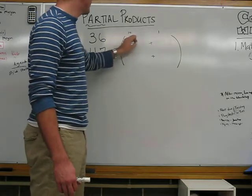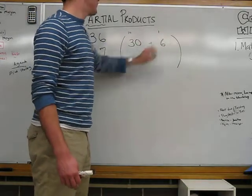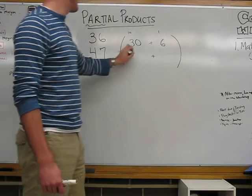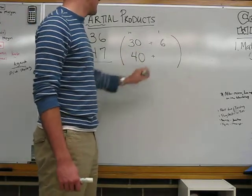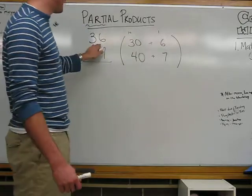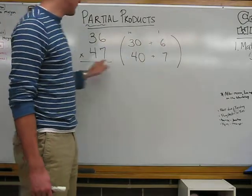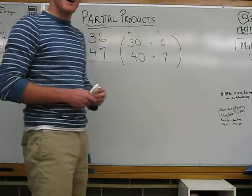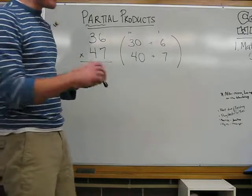36, well, in our tens place, we have 30. In our ones place, we have 6. For 47, in our tens place, we have 40. In our ones place, we have 7. So, 30 plus 6 is 36. 40 plus 7 equals 47. Again, let's think that bow tie.